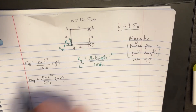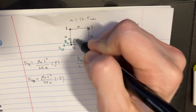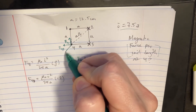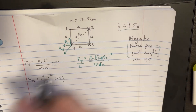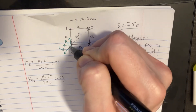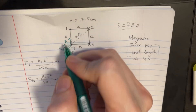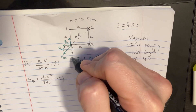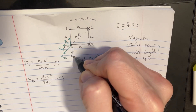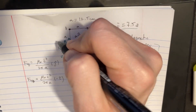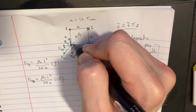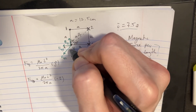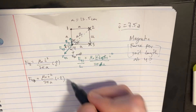Now we look at the diagonal wire. The distance between them is now A times the square root of 2. These currents are also in opposite directions, so this force is going away diagonally. We can break that into components — F4,2 sine theta and F4,2 cosine theta. The angle theta is 45 degrees because this is a square, so all the diagonal angles are 45 degrees.